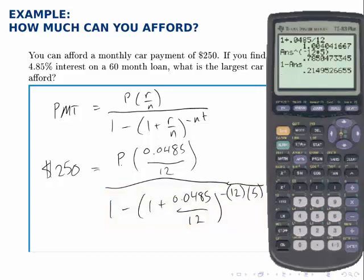Now if I'm solving for P, I'll need to multiply this entire denominator over to the other side. That entire denominator is the single number 0.2149, and so on. So I'll multiply that by 250.